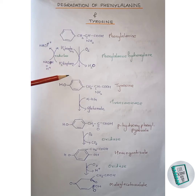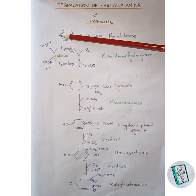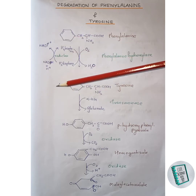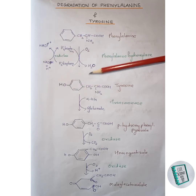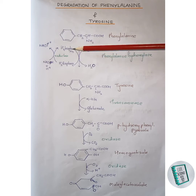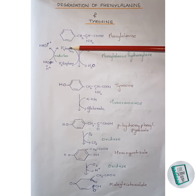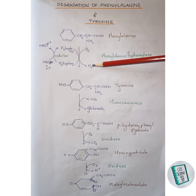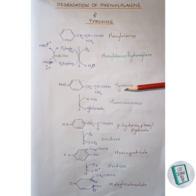In this step, one oxygen atom of the O2 molecule attaches to the para position of phenylalanine and forms an OH group there. The other oxygen atom is reduced with the reducing equivalents provided by tetrahydrobiopterin, which in turn is provided by NADPH2. This tetrahydrobiopterin donates two of its reducing equivalents to the remaining oxygen atom and forms a water molecule. Thus, tyrosine is formed.